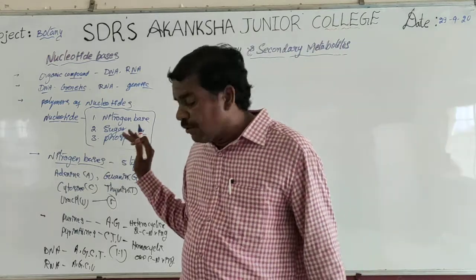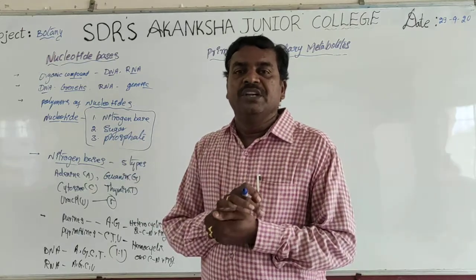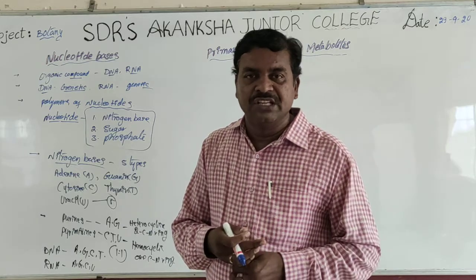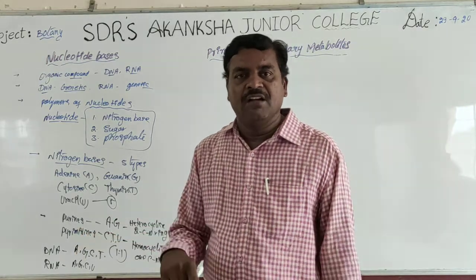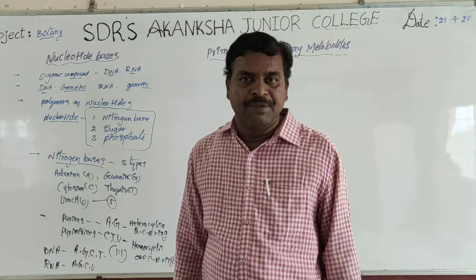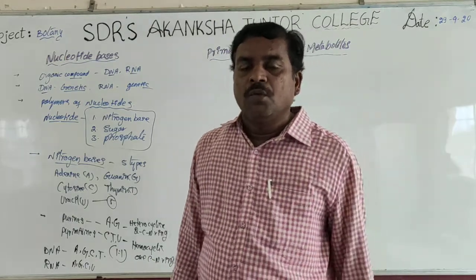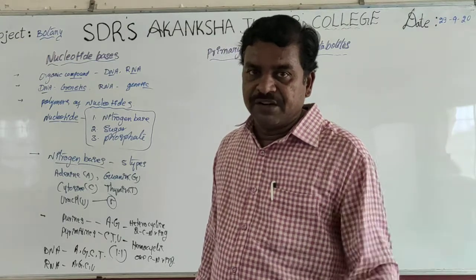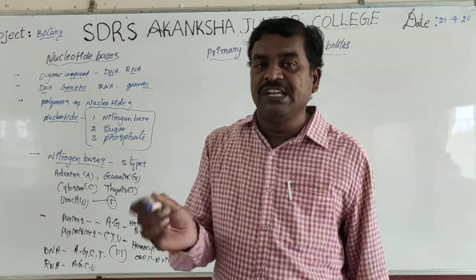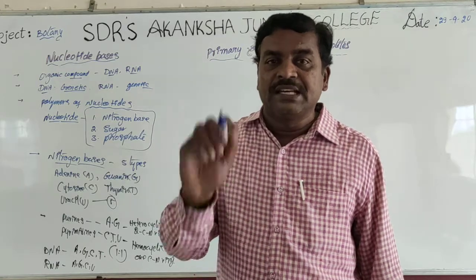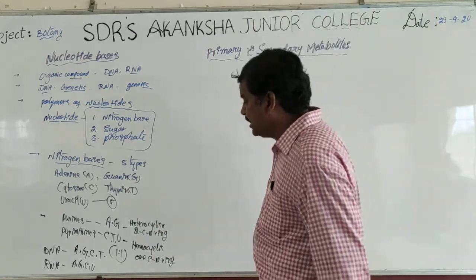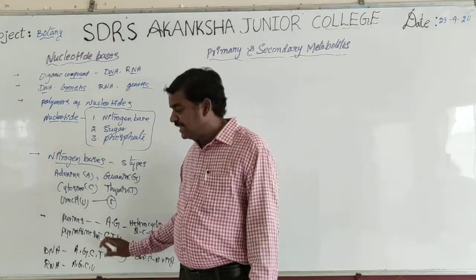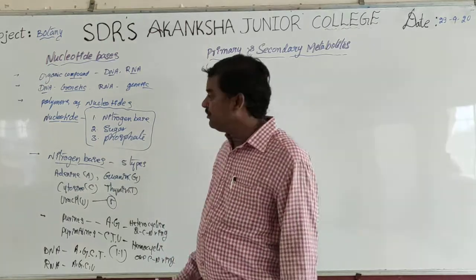Purines are common in DNA and RNA. Purines A and G are present in both DNA and RNA. But pyrimidines are different. One pyrimidine is common — Cytosine is the common pyrimidine present in both DNA and RNA. Instead of Thymine, Uracil is present in RNA. That is where the nitrogen bases differ.